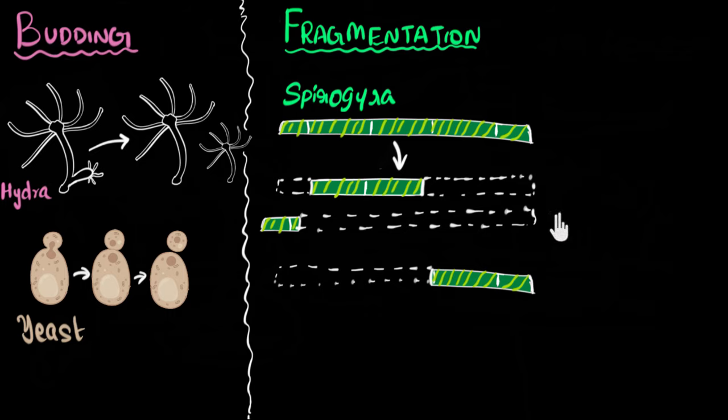And by the way, this process of regrowing your entire body, or regrowing parts of the body, this process is often called regeneration. Because you're regenerating parts of your body. And so, in this type of reproduction, when the organism matures, they just fragment themselves into tiny pieces. And then, each piece regenerates to grow its entire body.